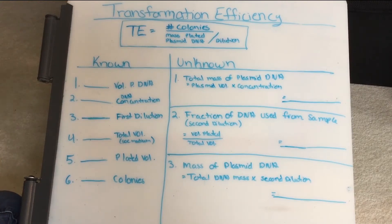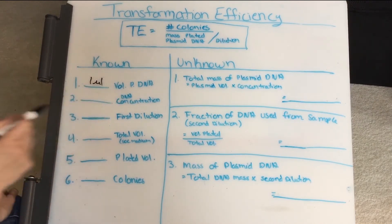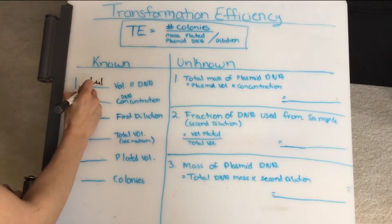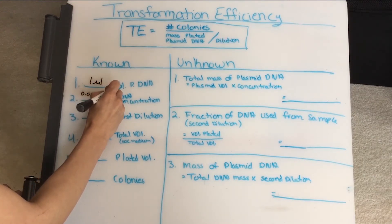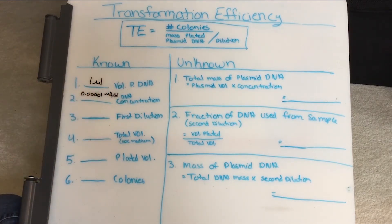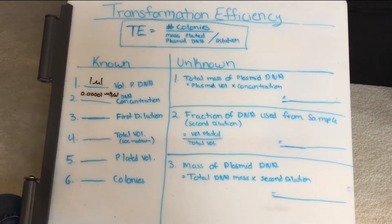So my knowns are the following: I have one microliter of plasmid DNA, and then I had 10 picograms per microliter of DNA, and that converts to 0.00001 microgram per microliter of DNA. That's my concentration there. The first dilution that I did was where I took the 10 microliters and put it into the 990 microliters of SOC medium.